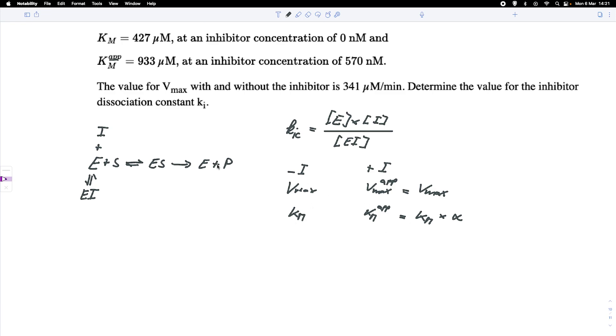And we know that alpha can be written as 1 plus the inhibitor concentration divided by KIC. So that is how alpha is defined.